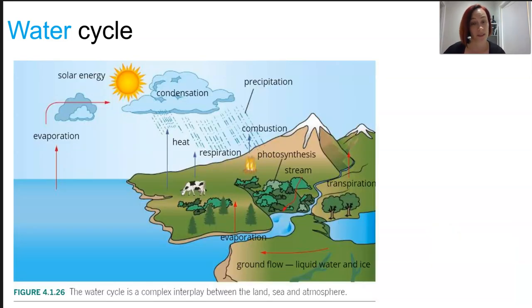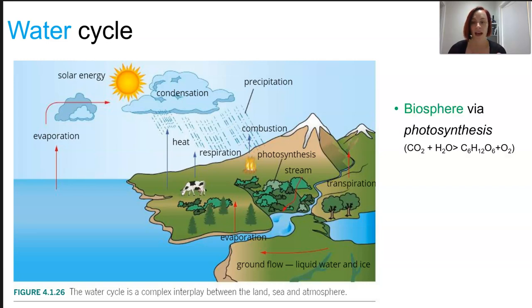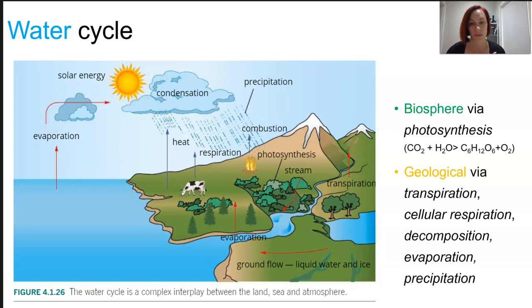Now, water enters the biosphere, the organic component via photosynthesis, where it's incorporated into carbohydrate molecules. So the hydrogen and the oxygen are incorporated into the carbohydrate molecules. And the water is being taken in by the plant as either water vapor or via groundwater through the roots. It's released back into the atmosphere through transpiration, cellular respiration and decomposition. Also, parts of the geological section, we're talking evaporation and precipitation, just those basic procedures that we learn about.